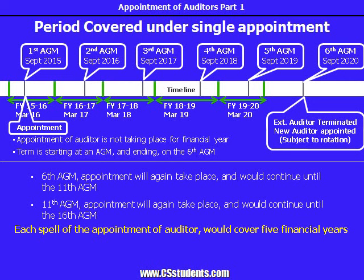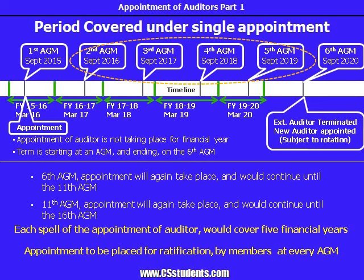There is an additional requirement given in the proviso to subsection 1 of Section 139, which says: the company shall place the matter relating to such appointment for ratification by members at every annual general meeting. Means, although the appointment has taken effect from the first to sixth annual general meeting, in every annual general meeting between those, there will be ratification of such appointment. As a company secretary, you need to check whether the appointment of the auditor of your company is due for ratification or for reappointment, and accordingly place the item in the AGM notice.